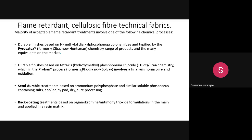The Proban process is sold by the company Rhodia, now called Solvay. These companies market the flame retardant chemicals. All these finishing chemicals — flame retardant chemicals — are applied through a pad-dry-cure process. You prepare a chemical mixture, take the fabric, pad it in a padding mangle, then dry and cure so the chemicals form a covalent bond — a three-dimensional network — providing durability.